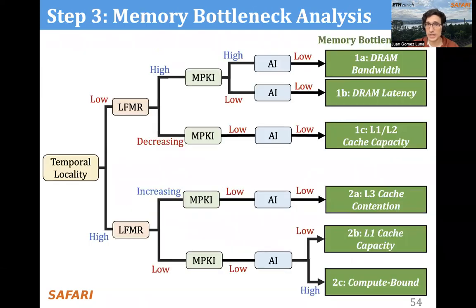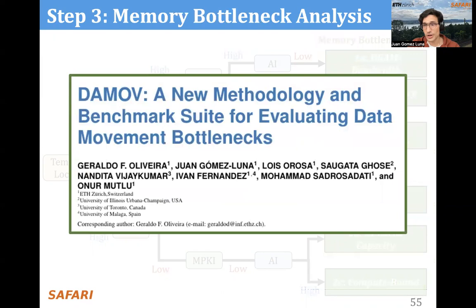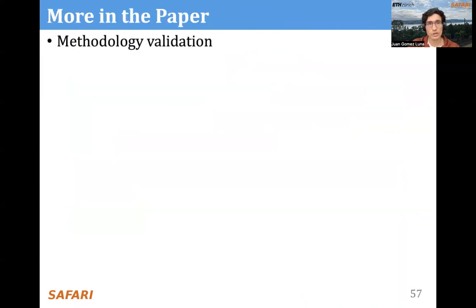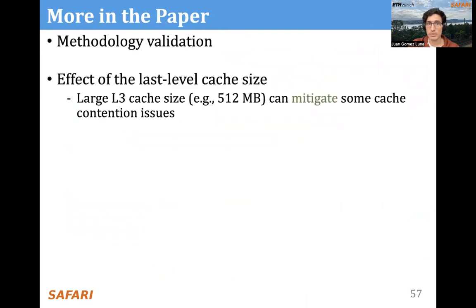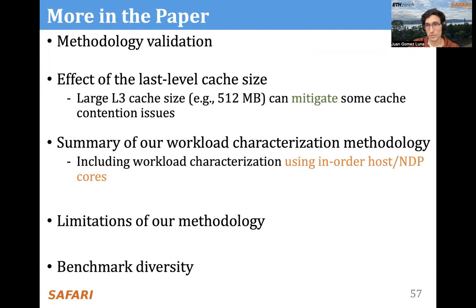This decision tree allows us to identify which class of memory bottleneck a function belongs to, depending on metrics such as temporal locality, LFMR, MPKI, and arithmetic intensity. You can learn much more about these six classes in the paper, which also contains the methodology validation, a study about the effect of last-level cache size, a summary of the workload characterization methodology, the limitations of our methodology, and a study of benchmark diversity.